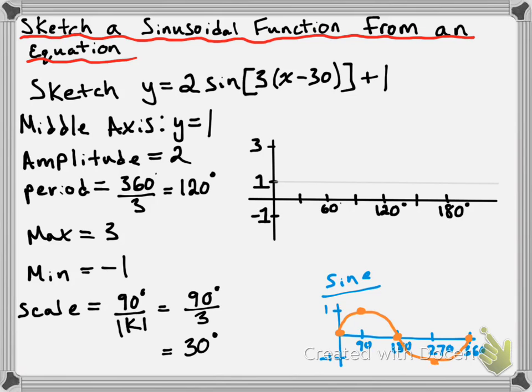Our graph is also a sine function with a positive a value, so it's going to be oriented the same way — not reflected. It's going to start at its middle axis, just like the regular sine function. However, we have a shift — in this case, we've shifted 30 degrees to the right. That means our starting value is not going to be on the y-axis. Our first point is going to be above 30 degrees, on our middle axis.